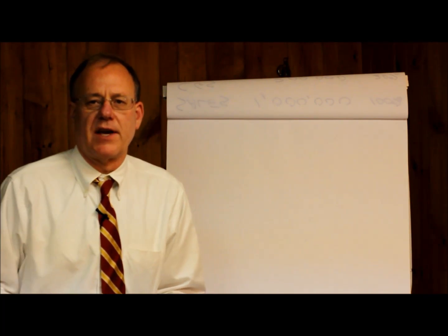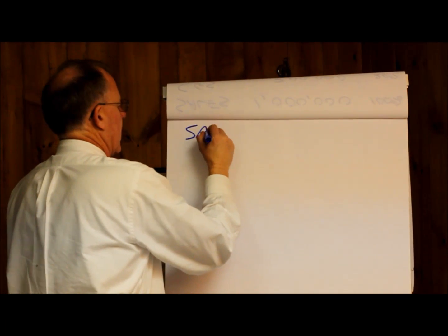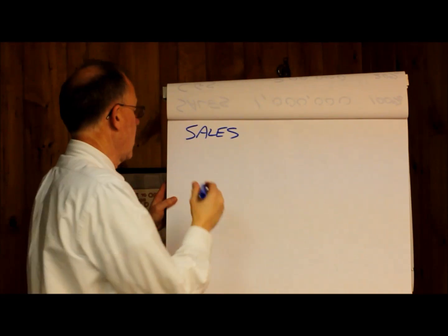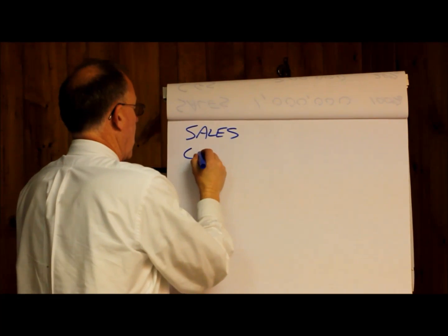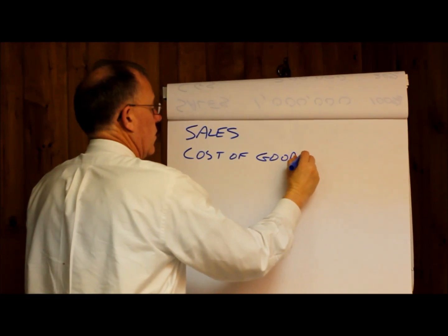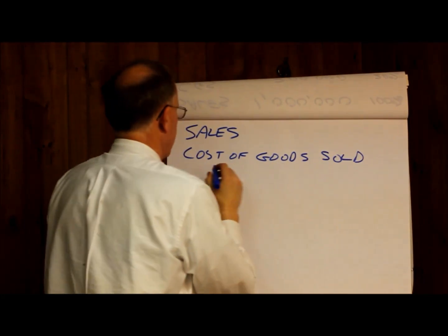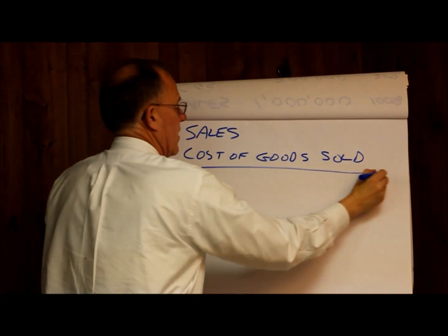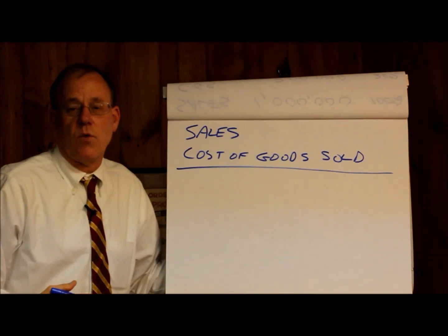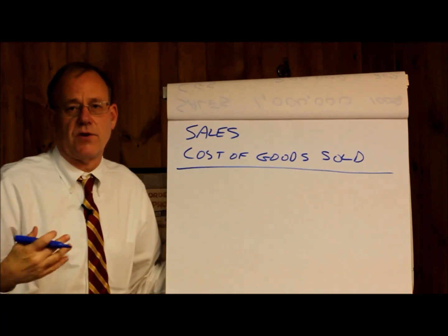So first, we have to look at an income statement. On an income statement, you'll have sales, and then you'll have something called cost of goods sold — often abbreviated as CGS. What cost of goods sold is, is the direct costs that go into anything you sell.